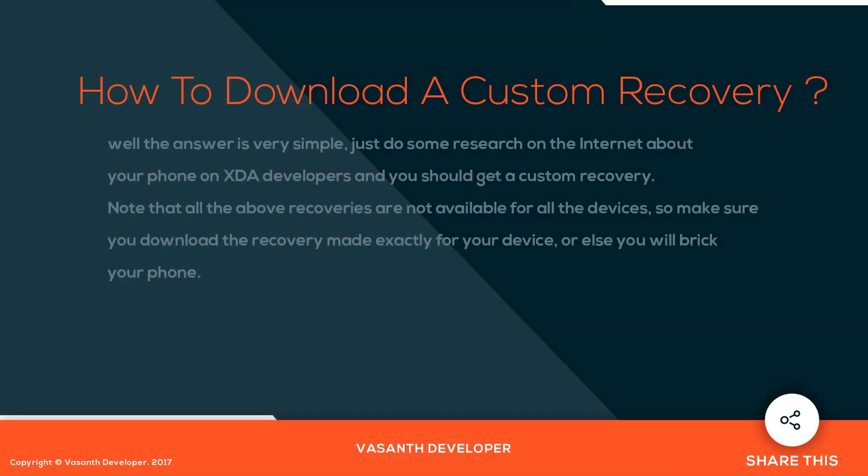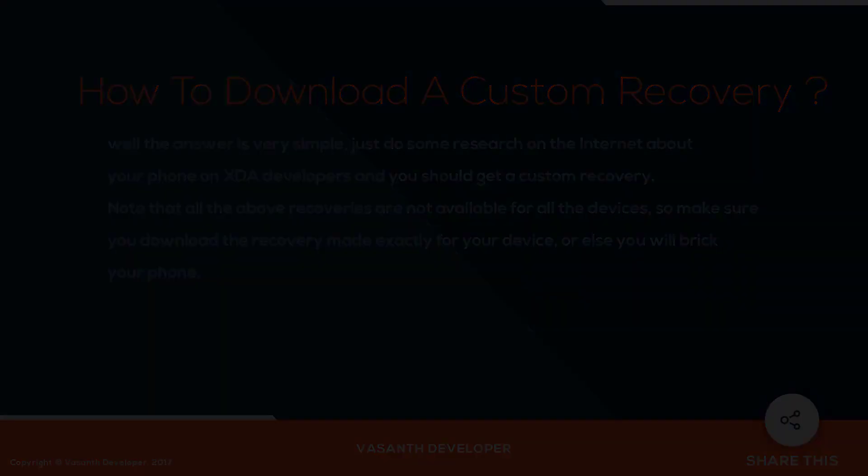How do you download a custom recovery? The answer is very simple — just do some research on the internet about your phone on XDA Developers and you should find a custom recovery. Note that all the above recoveries are not available for all devices, so make sure to download the recovery that is made exactly for your device, or else you will break your phone.